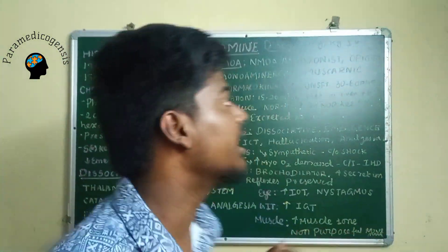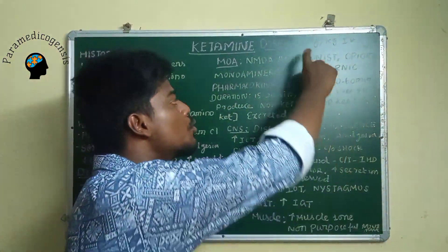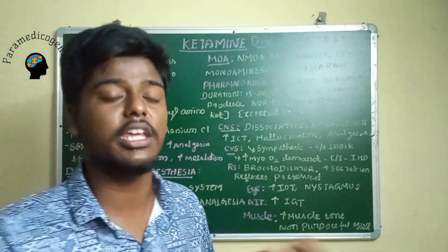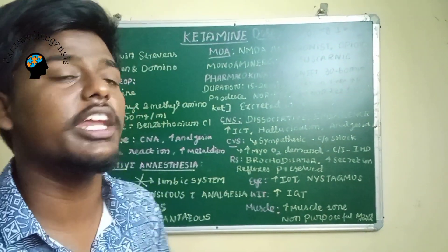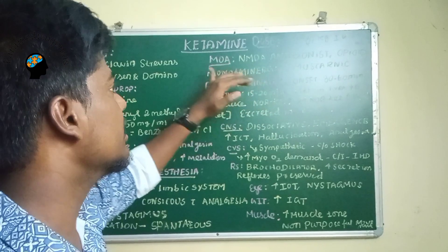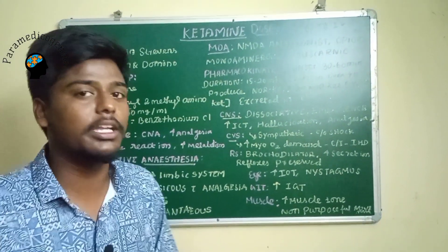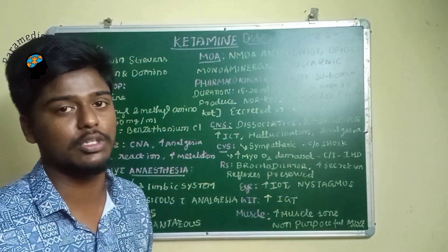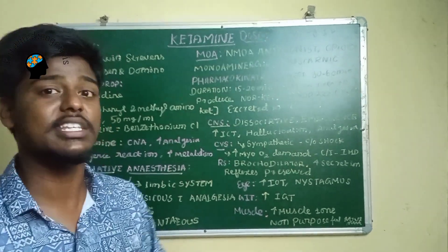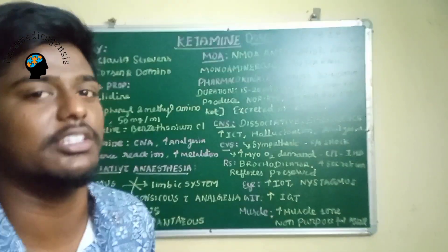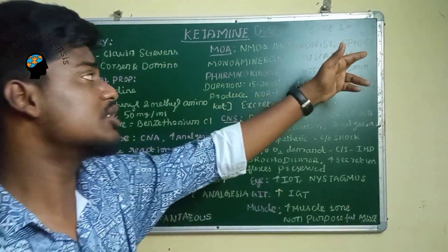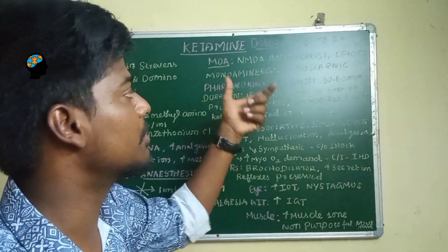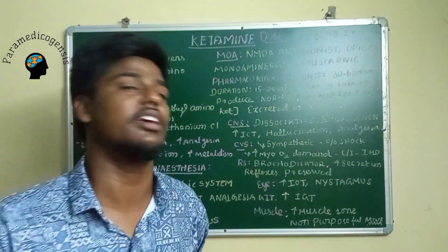The dosage of ketamine is 2 mg per kg IV, and it is also used IM at 5 to 10 mg per kg. The mechanism of action is that it is an antagonist of NMDA receptors — N-methyl-D-aspartate receptors. It also acts on opioid receptors, monoaminergic receptors, and muscarinic receptors.